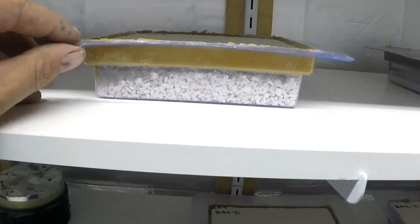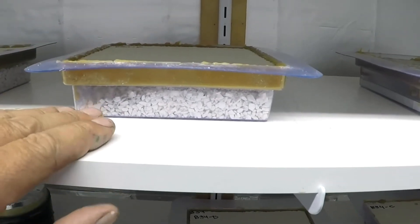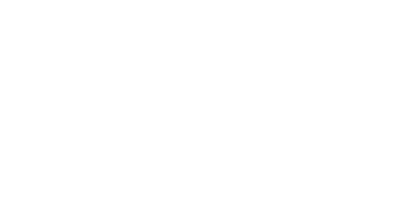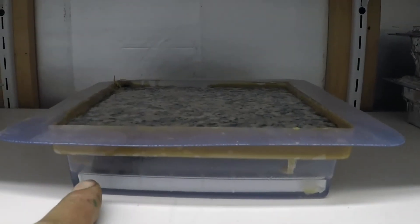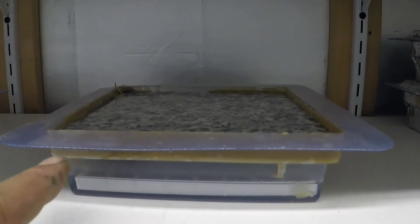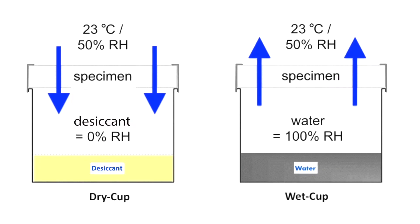We also routinely would do a dry cup test. What's in the bottom of these is a desiccant, a material that has been baked so totally dry that water vapor goes from the 50% environment through the sample into the desiccant. It's sort of the opposite of the wet cup test, where water vapor is leaving the water, passing through the specimen, and then leaving into the 50% RH.